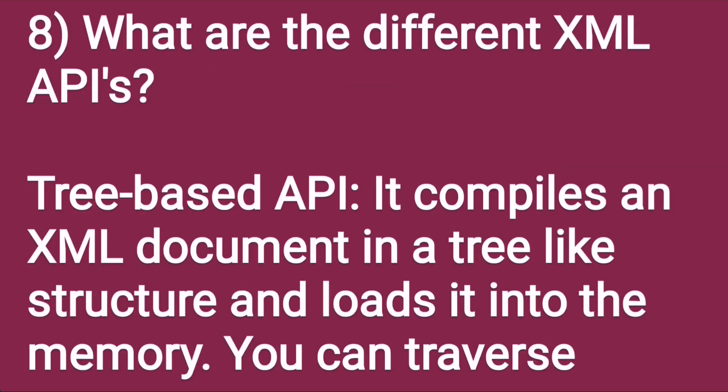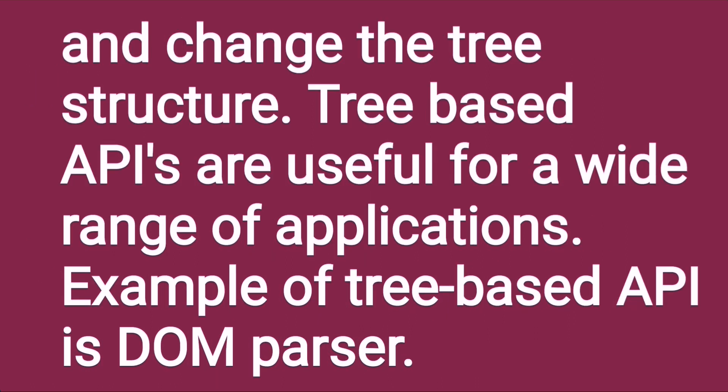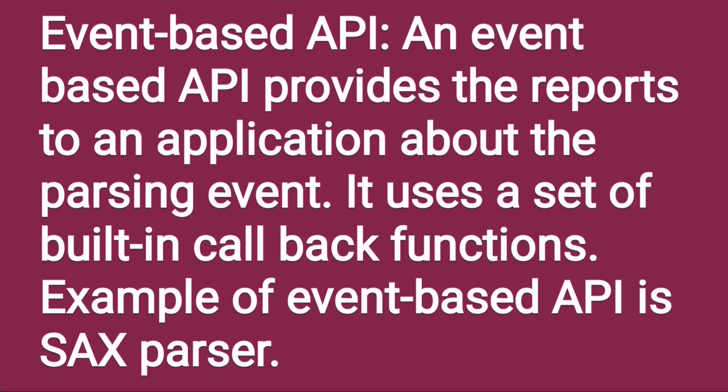What are the different XML APIs? Tree-based API: it compiles an XML document into a tree-like structure and loads it into memory. You can traverse and change the tree structure. Tree-based APIs are useful for a wide range of applications. An example of a tree-based API is the DOM parser. Event-based API: it provides reports to an application about parsing events and uses a set of built-in callback functions. An example of an event-based API is the SAX parser.